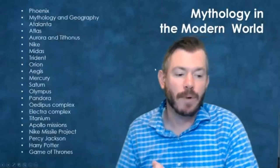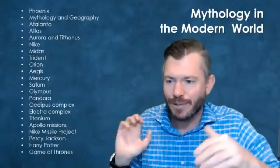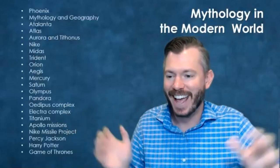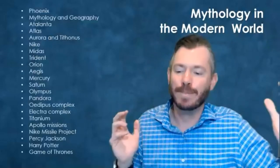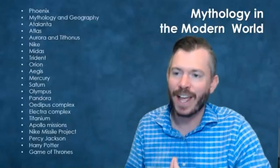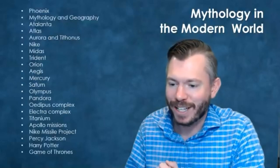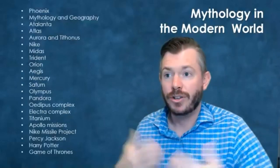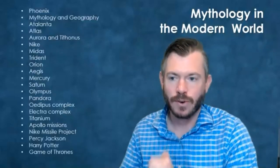We finally finished up with mythology in the modern world. We talked through geography — places like Phoenix. We talked through marketing and companies — Nike, those car companies that failed, Trident gum. We talked about it in medicine and science: the Oedipus complex, the Electra complex, the Apollo space missions, the Nike missile projects. And then a little about their connection to modern literature — Percy Jackson, Harry Potter, Game of Thrones, that sort of thing.